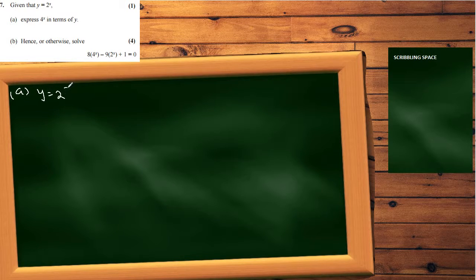Hi guys, welcome to May 2015 C1 question number seven. The first part says we are given y equals 2 to the x, and we need to express 4 to the x in terms of y.